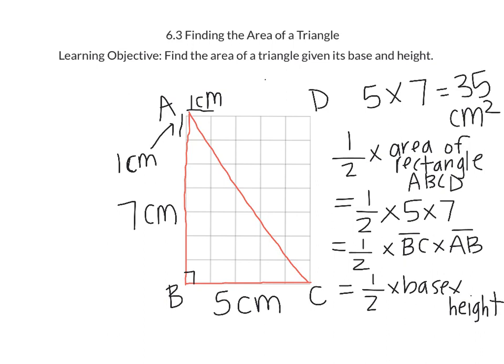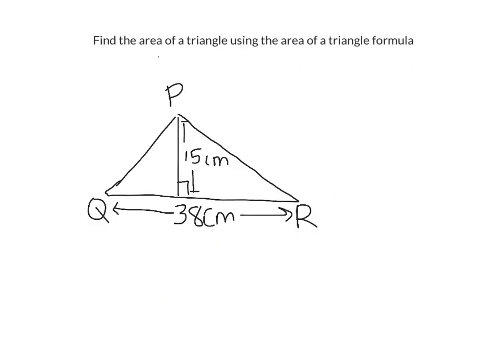We're going to be using this formula on the next couple examples to find the area of triangles. If you remember from the last example, we figured out that the area of a triangle is equal to one half times the base times the height.